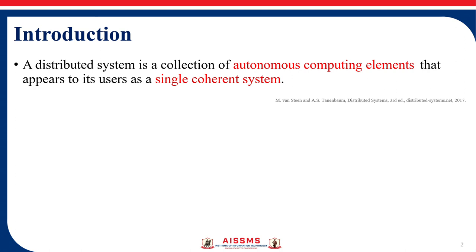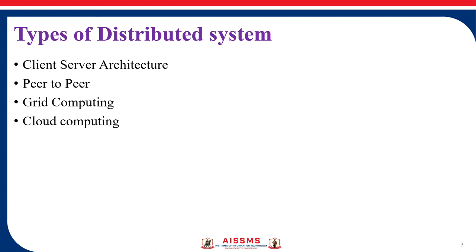Next we will see the different types of distributed systems. We have client-server architecture, peer-to-peer systems, grid computing, cloud computing, cluster systems, distributed databases, middleware-based systems, sensor networks, mobile ad hoc networks, and so on.